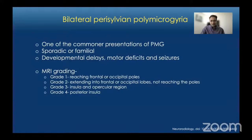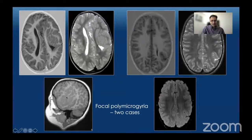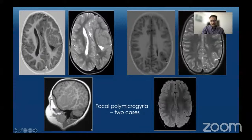These two cases show focal polymicrogyria. The patient on the left has an almost mass-like lesion in the left frontal lobe with multiple lobular areas of gray and white matter — this is complex nodular polymicrogyria, which can mimic a mass but follows gray matter signal on all sequences. The other example shows focal polymicrogyria in the left parietal lobe with an abnormally deep sulcus and thickened lobular cortex lining it. This can cause seizures and requires careful MRI evaluation.